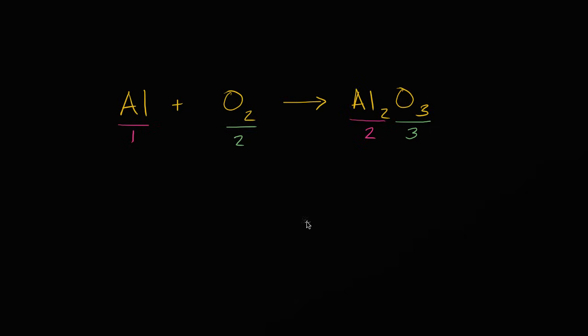So how do we do that? Well, one thing might be to say, okay, if I've got two aluminums here, and I have one aluminum here, well, why don't I just double the number of aluminums right over here? So I could just write a two in front of it. So now this says two aluminums, so I no longer have one aluminum here. I now have two aluminums. And so it looks like the aluminums are balanced, and they are indeed balanced.